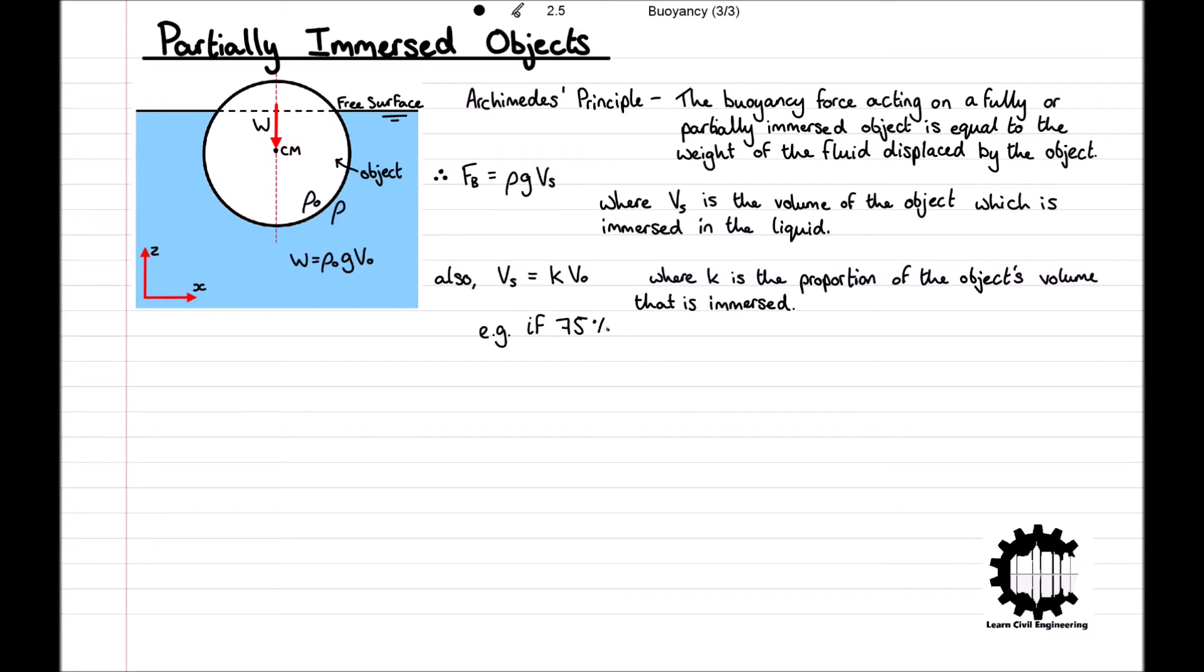Here, if 75% of the object was immersed, for example, k would equal 0.75, and so k must be greater than or equal to 0 and less than or equal to 1.